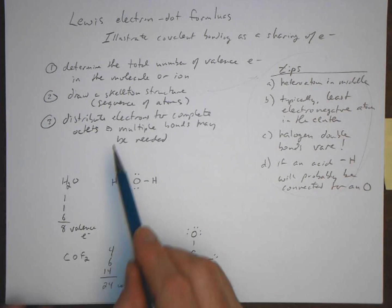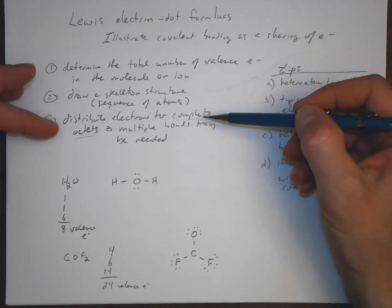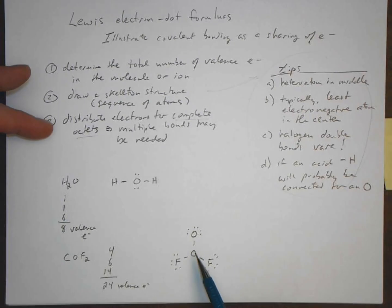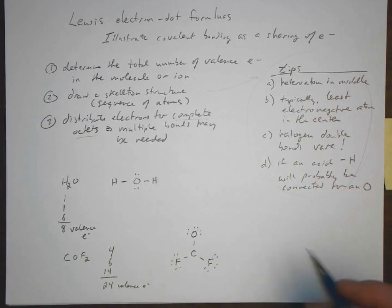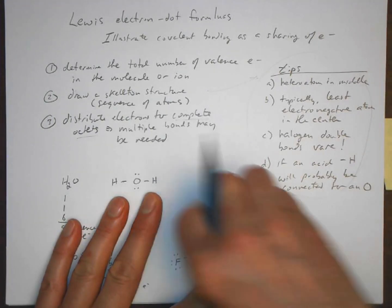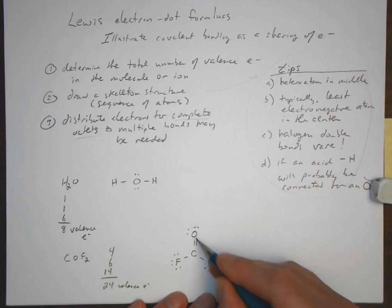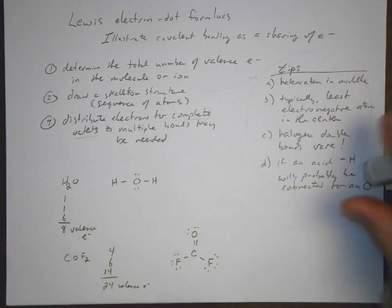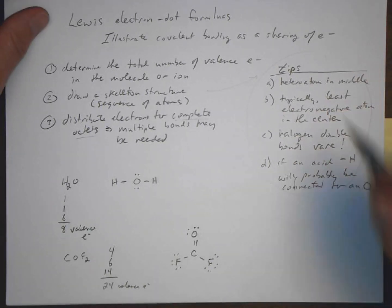Carbon only has six electrons around it in that arrangement, so we need to complete its octet. Since halogen double bonds are rare, we take two electrons from oxygen and make a double bond between carbon and oxygen. Now oxygen still has its octet, carbon has eight electrons, and both fluorines have eight. This is an acceptable and reasonable Lewis structure for COF₂.